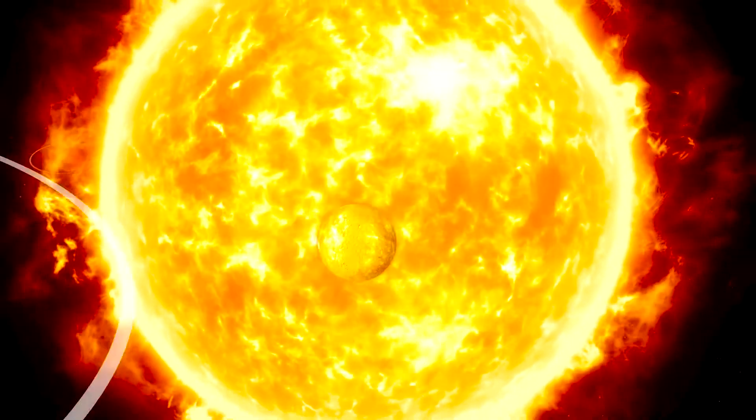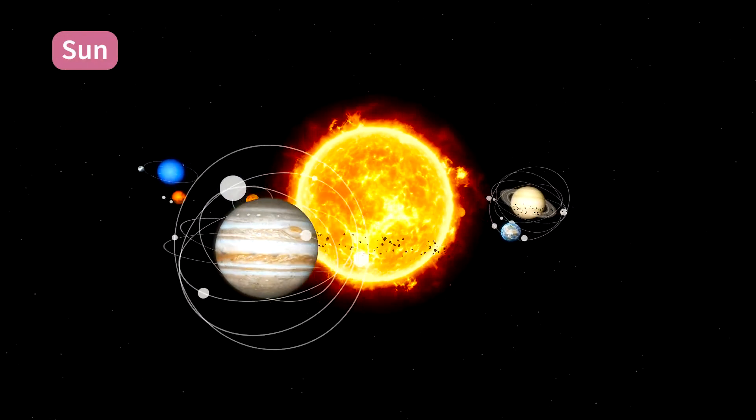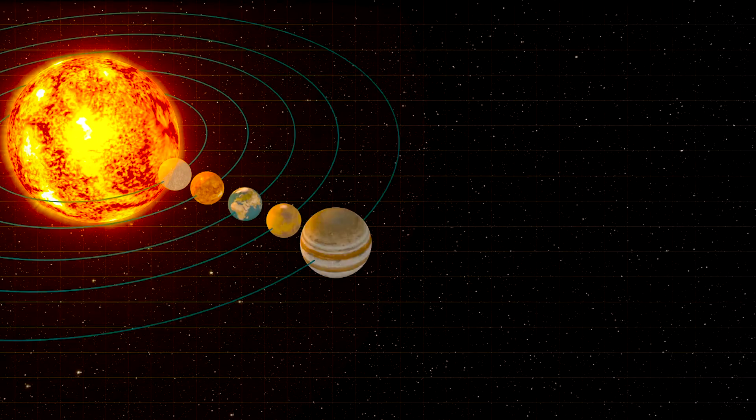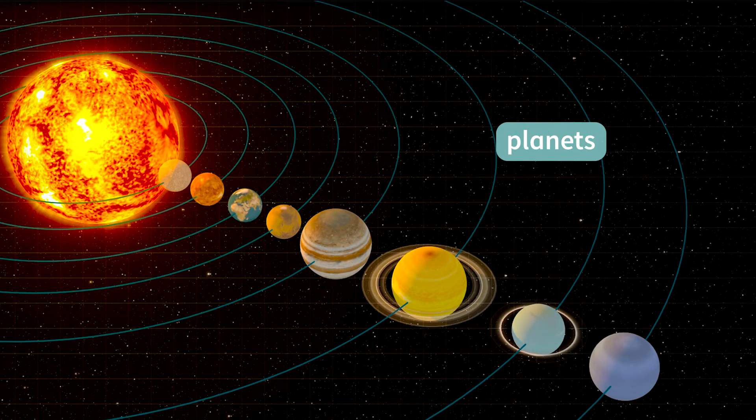At the center of the solar system is the sun. The sun is a star. Our solar system has eight planets. All of these planets travel around the sun.